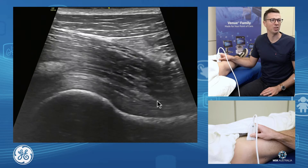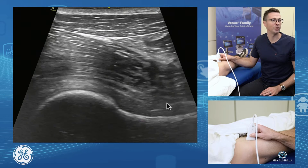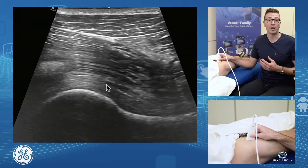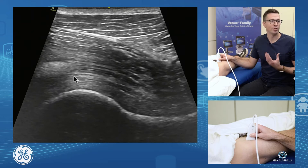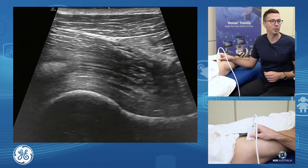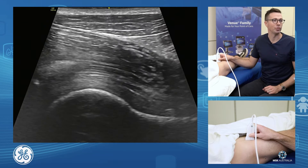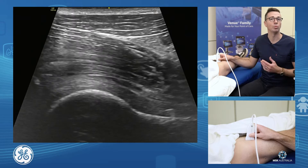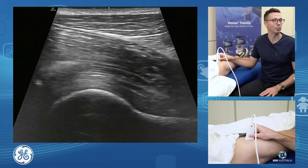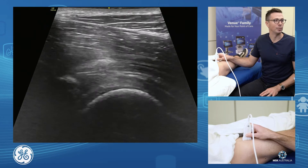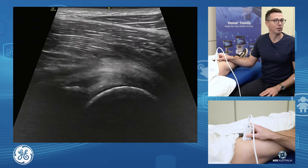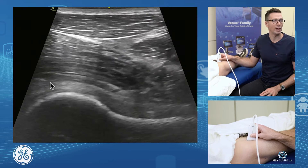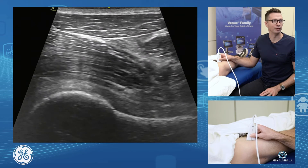The capsule anteriorly is the anterior iliofemoral ligament. So if you were to have a joint effusion, this is where it would be. If you were to have joint synovitis, this is where it would be — within the joint capsule itself. We can have a limited assessment of the anterior labrum and the joint itself.